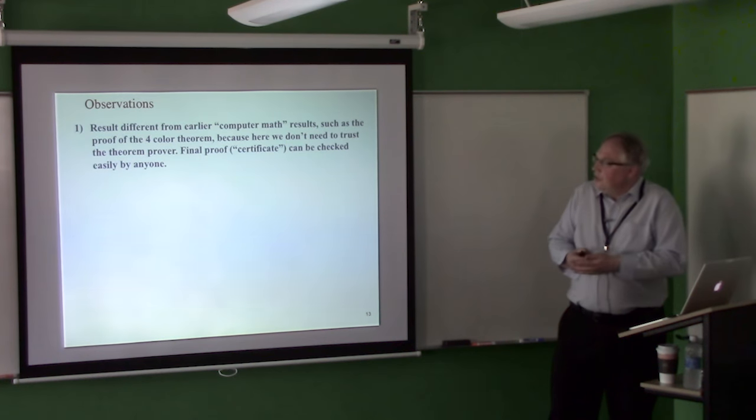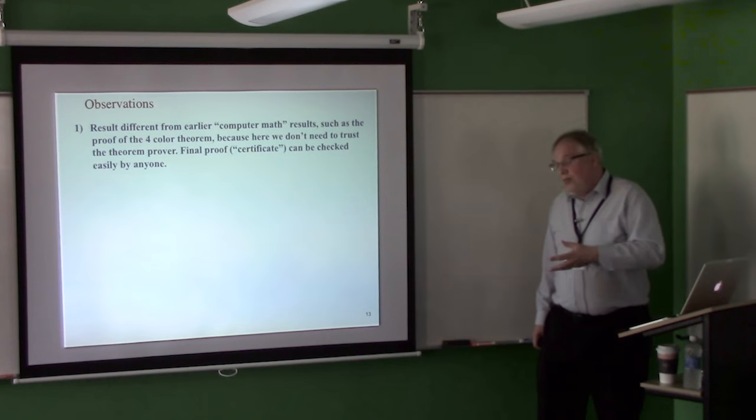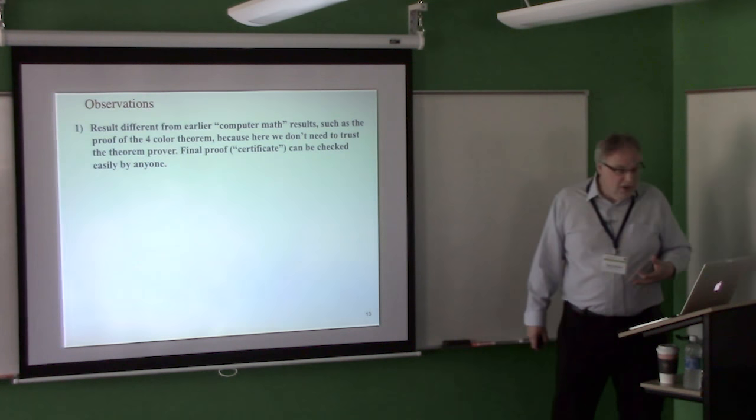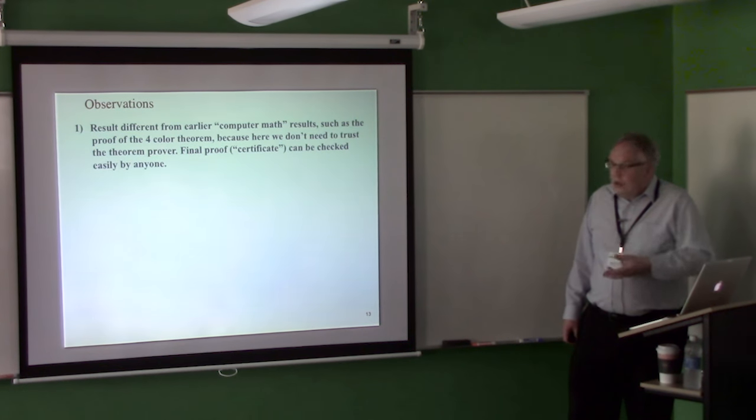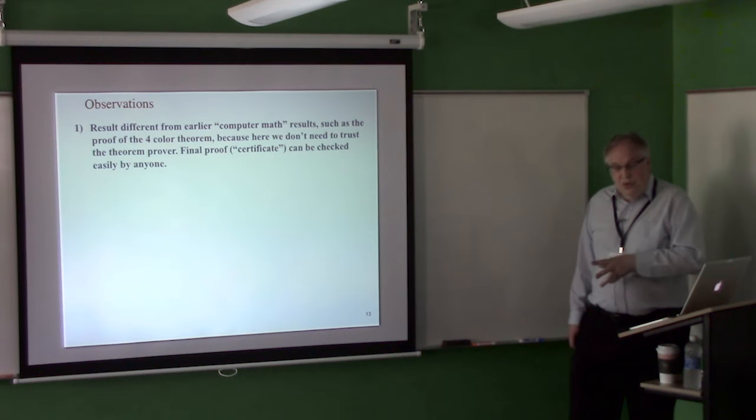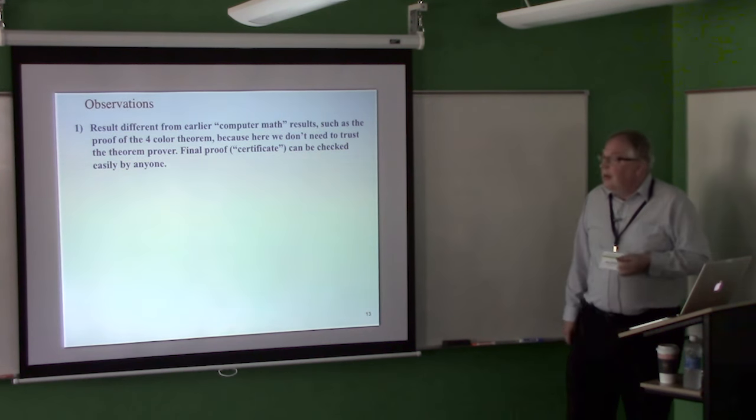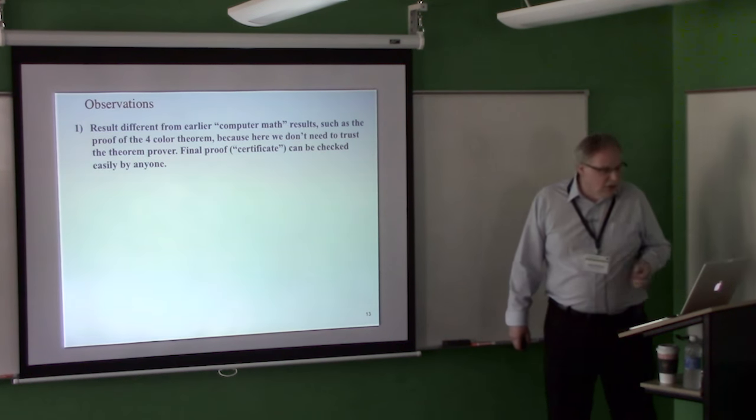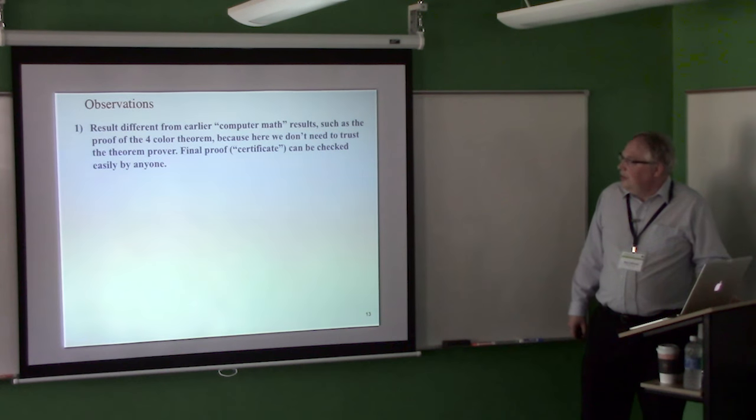The problem was when that was published, it was quite controversial. In part, it was controversial because how would you really know that the theorem prover they used to check all these cases was itself correct. It was hundreds of lines of code, probably thousands, actually. So, and in fact, when people, so the only thing people could think of is, well, let's try to replicate it by independent groups. And actually, in that replication, a few missing cases were discovered. They were added and the proof remained correct. But the only confidence was over time, I think it has been done two or three times at least, redone the proof with a different theorem prover, new code, getting the same result. I can call it all maps. So that's how people build up confidence.